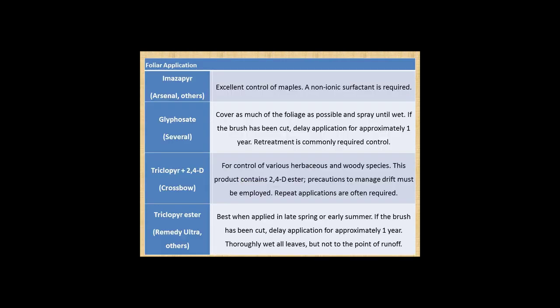Here are a few examples of herbicides. Imazapyr, which is kind of like Arsenal, is good for excellent control of maples — that picture I showed earlier. A non-ionic surfactant is required. I sometimes use dish soap as a surfactant, though it doesn't work as well as dedicated surfactants. If you pay attention to how your herbicide is reacting to the leaves — if it's beading up and running off, that's not what you want. You want it to stick, and if you have dye you can really tell if the dye's sticking or just rolling off.